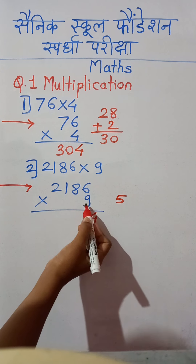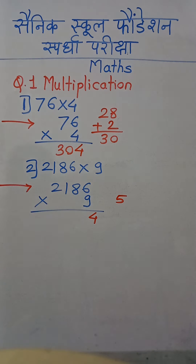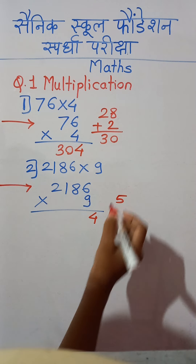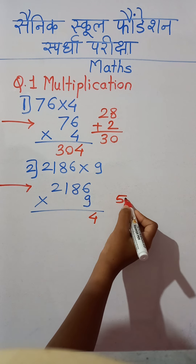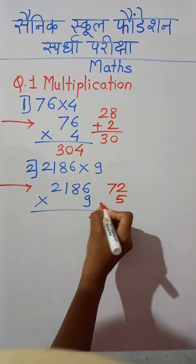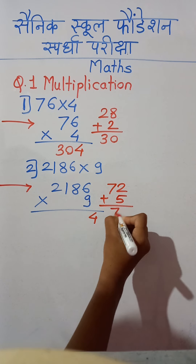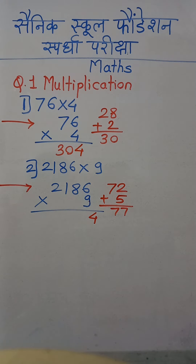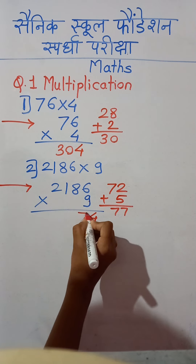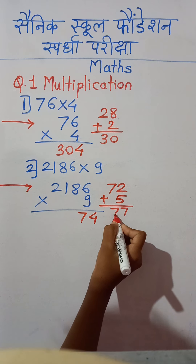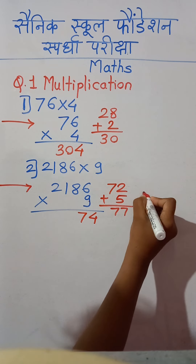Now 9 multiplied by 8, we calculate, and add the carry also. So 72 plus 5 is 77. Every time we should count the carry also. We write 7 at the units place here and the tens place digit, that is 7, will be carried.